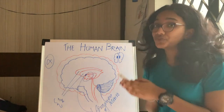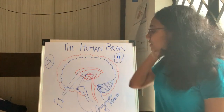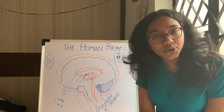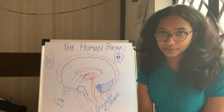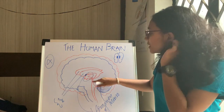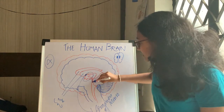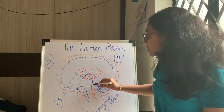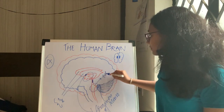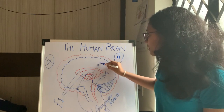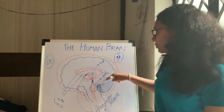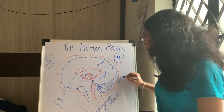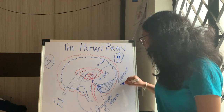Now let's come down to the fourth ventricle. Along with the corpora quadrigemina, the cerebral aqueduct is also a part of the midbrain. Through the cerebral aqueduct, the third ventricle is attached to the fourth ventricle. So the third and fourth ventricles are connected by the cerebral aqueduct.